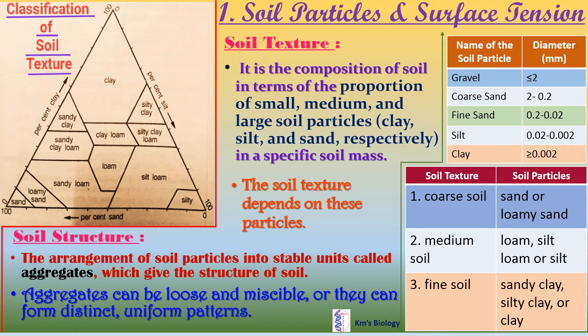The soil texture depends on these particles. Here is a table diagram that shows different types of soil particles: firstly gravel, coarse sand, fine sand, silt, and clay. Another table diagram shows three types of soil texture: firstly coarse soil, secondly medium soil, and thirdly fine soil. Here is a diagram that shows soil texture classification depicted as a triangular structure.